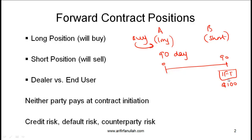In a forward contract, the contract is signed at time 0 but no money changes hands at time 0. In this signed contract, A is making a commitment to buy one share of IFT from party B, the short party, who is making a commitment to sell. A simple way to remember this: S for short, S for sell. The underlying asset here is one share of IFT, and the contract price at which A will buy from B is $100.